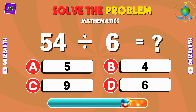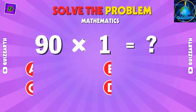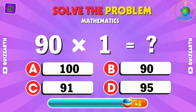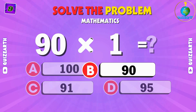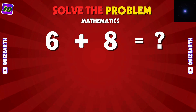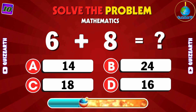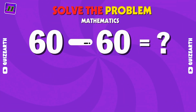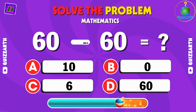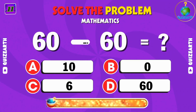Divide 54 by 6. C: 9. Multiply 90 by 1 — same number. B: 90. Add 6 and 8 together — can you find the answer fast? A: 14. What happens when you subtract 60 from 60? B: 0.